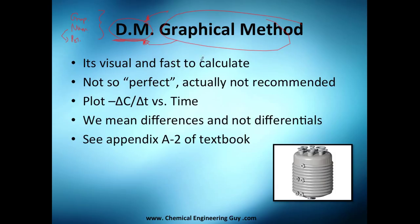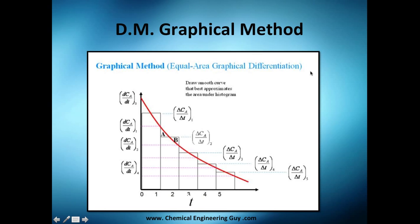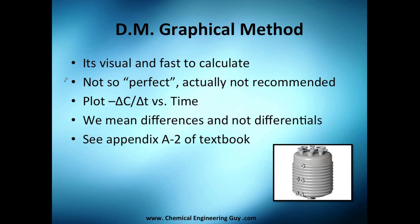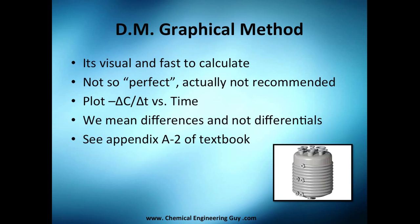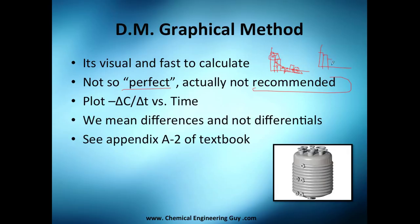The graphical method is visual and fast to calculate. We're going to make a graph. I don't really like it because it's not always perfect — sometimes you get values that are scattered: a huge one, then a small one, then a medium one. When you apply this method, you may find you're not satisfying all the data points; some are outside the limits. So it's not perfect, and I don't recommend it that much.